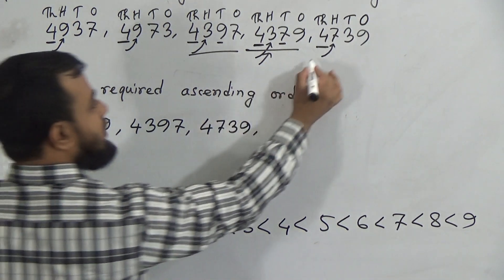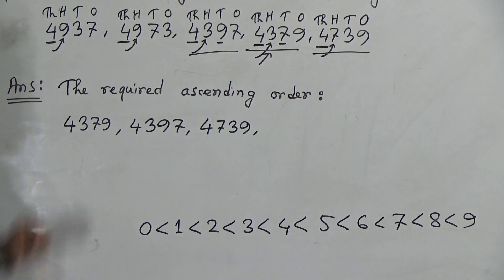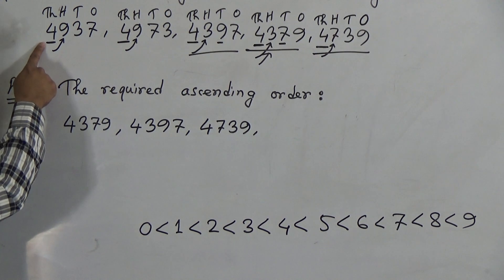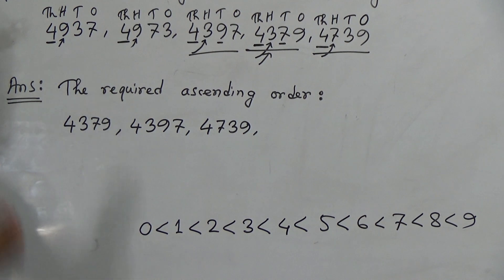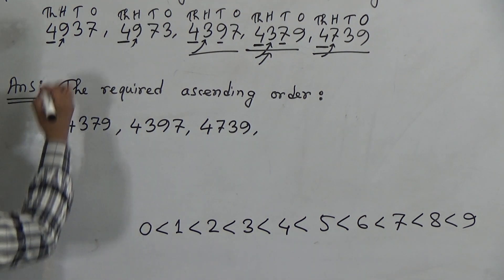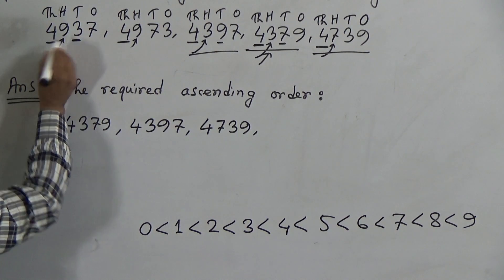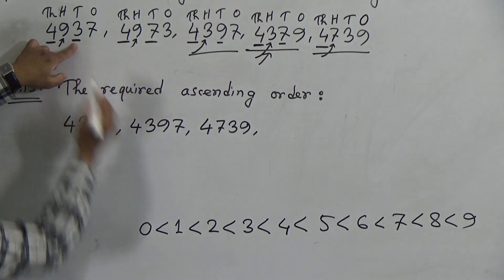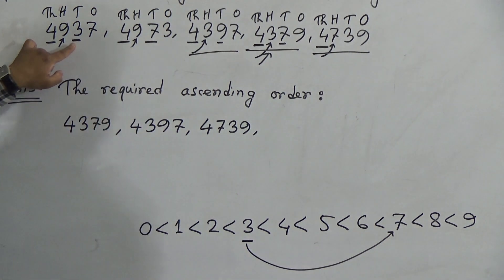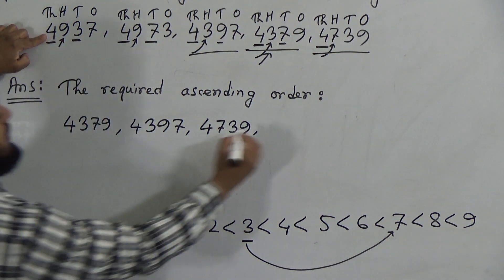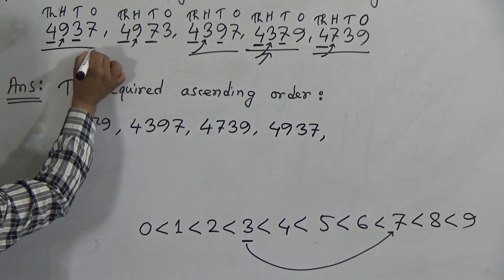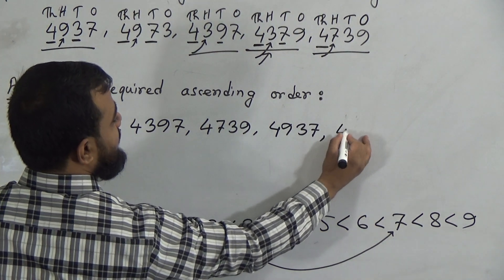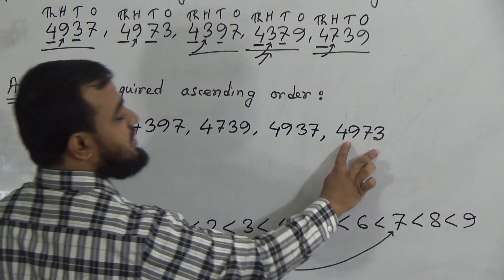Now only two numbers are remaining: 4,937 and 4,973. Both numbers have 4 in the 1000's place and 9 in the 100's place, so we cannot identify from these two place values. We go to the next place value — the 10's position. 4,937 has 3 in the 10's position, and 4,973 has 7 in the 10's position. 3 is the smallest, so 4,937 is our next number. That means 4,973 is our greatest number.